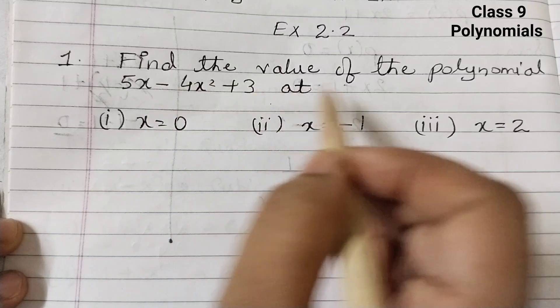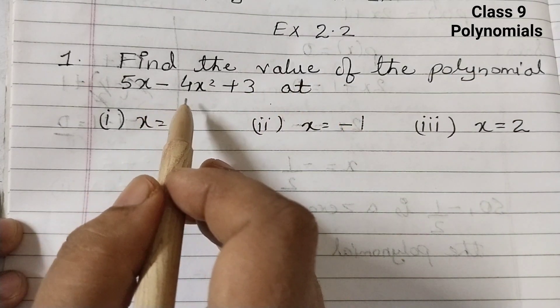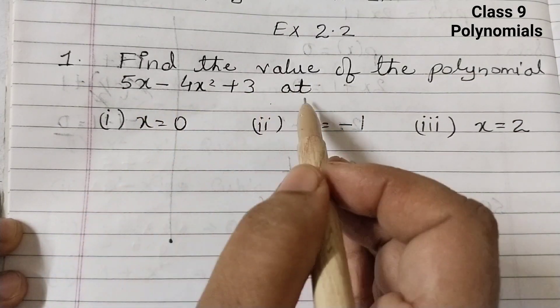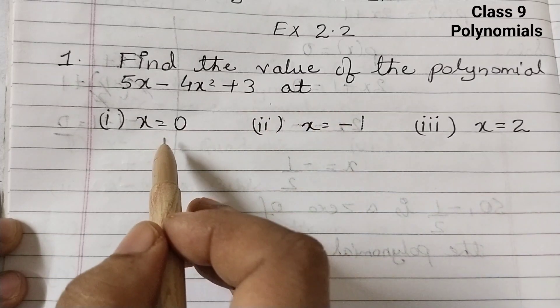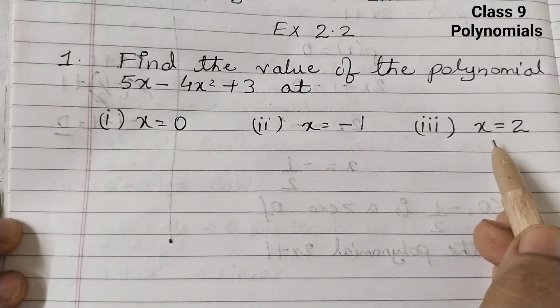Find the value of the polynomial 5x minus 4x squared plus 3 at x equals 0, x equals minus 1, and x equals 2.